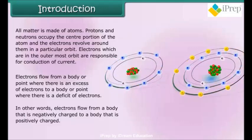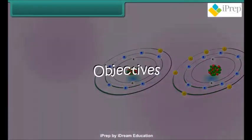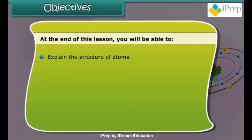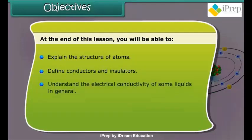Objectives: At the end of this lesson, you'll be able to explain the structure of atoms, define conductors and insulators, understand the electrical conductivity of some liquids in general, identify the chemical effects of electric current, and list the uses of chemical effect such as electroplating.